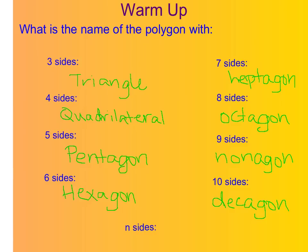We also have names for different polygons above ten sides. For example, a twelve-sided polygon is a dodecagon. However, for this chapter, if we have more than ten sides, we're just going to call it an n-gon. For example, eleven sides is an eleven-gon, fifteen sides is a fifteen-gon, twenty sides is a twenty-gon. We're literally just going to write that number and then put 'gon'.